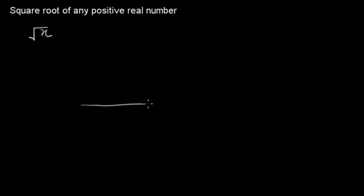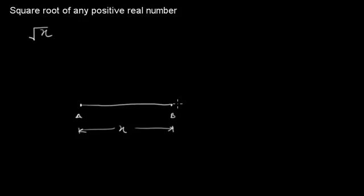For this, we will draw x units of length. We will call this line segment AB, and this is x units. Now from B, we will draw one more point on the same line which is 1 unit long, and this point is C.